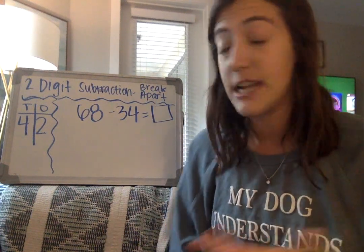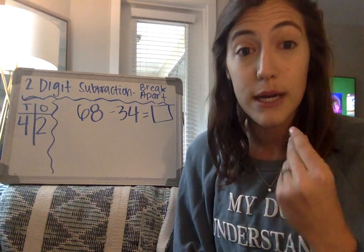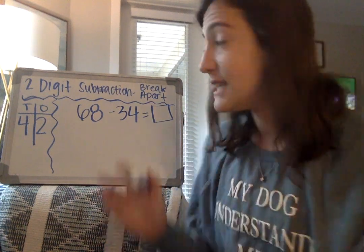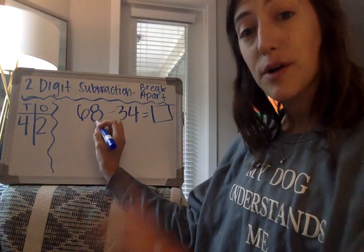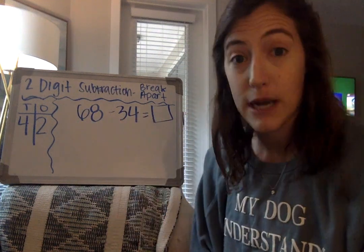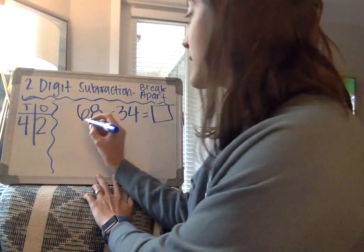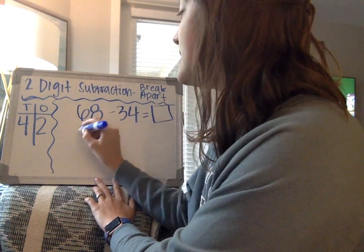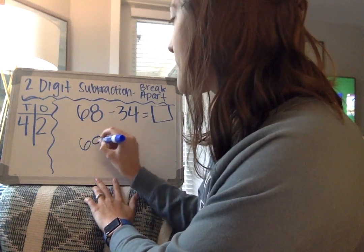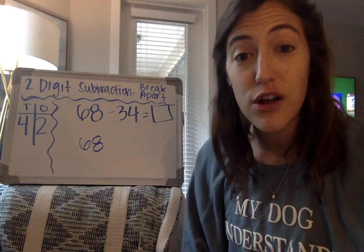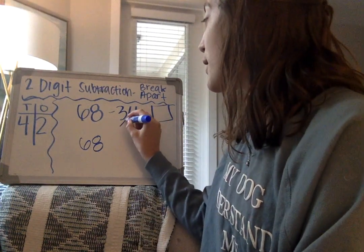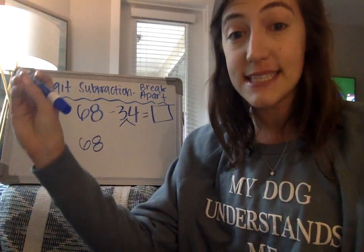So when we use the break-apart strategy, we always only break apart our second number. We keep our bigger number, our first number, the same, and we break apart our second number. So let's look at 68. We're going to bring our 68 down here. Now we're looking at our 34, and we're going to break apart the 34 into the tens and the ones.